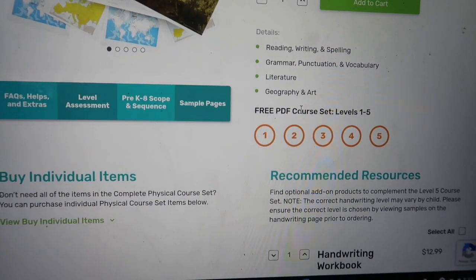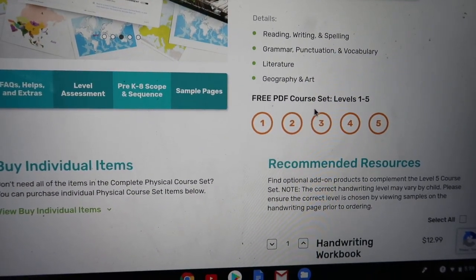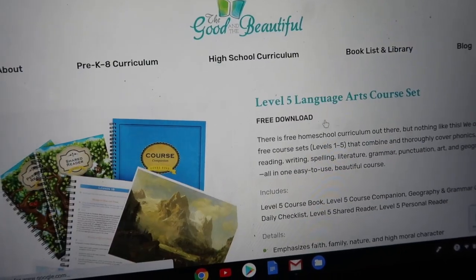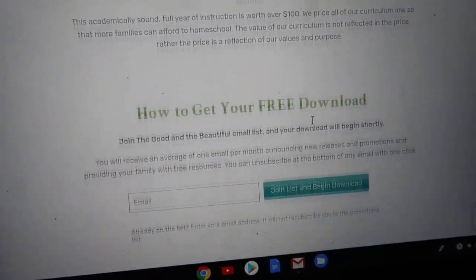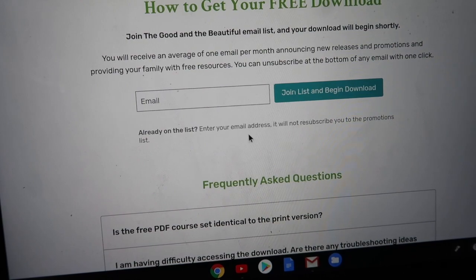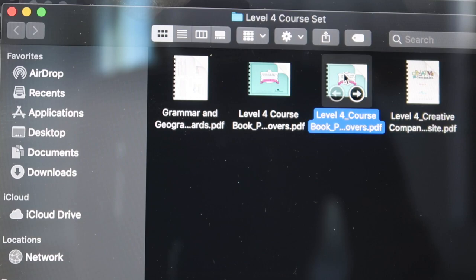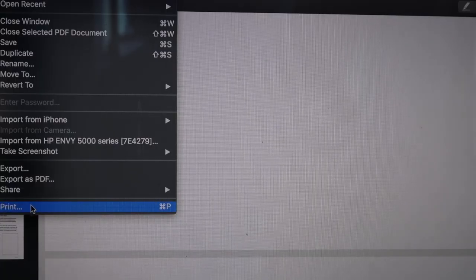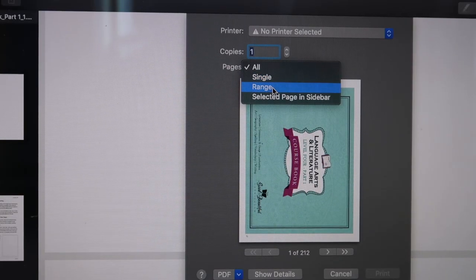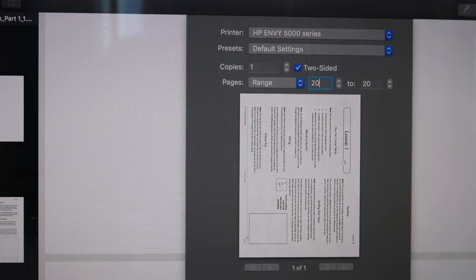When you're in the course you can scroll down and right here they have the free PDF course sets for levels one through five. You just click on that and you go through putting in your email and then it'll start downloading for you right away.